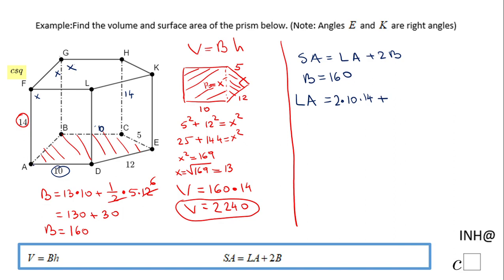Plus, going to the face on the left, GBAF — that one will be 14 times 13, because this 13 is the same as x. And that's only one face, so 13 times 14. Then on the other side, face LKED is 12 by 14, and we have one more face, HKEC, which is 14 by 5.